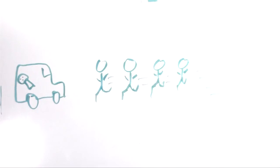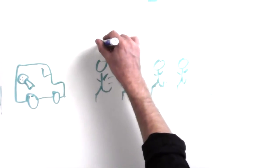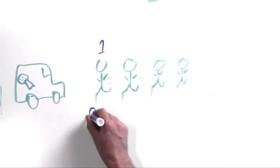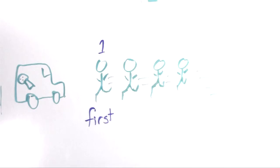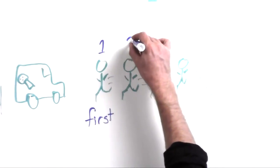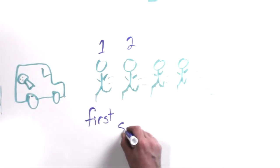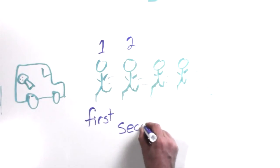So if they were number one, we say that they were first. Now the next person to get to the ice cream truck, we don't call them number two. We say that they were, I'm guessing you already know the word, who got there second. So the number two person is going to be second.